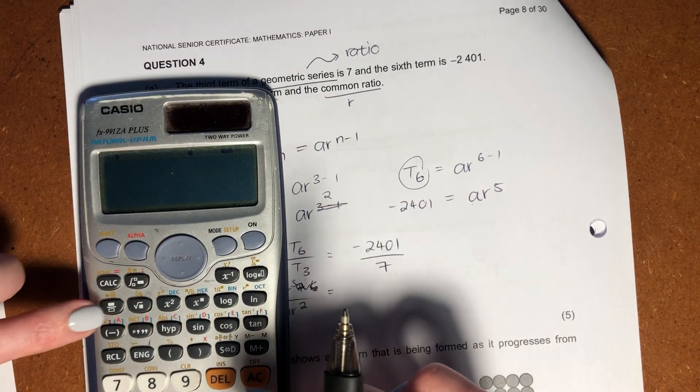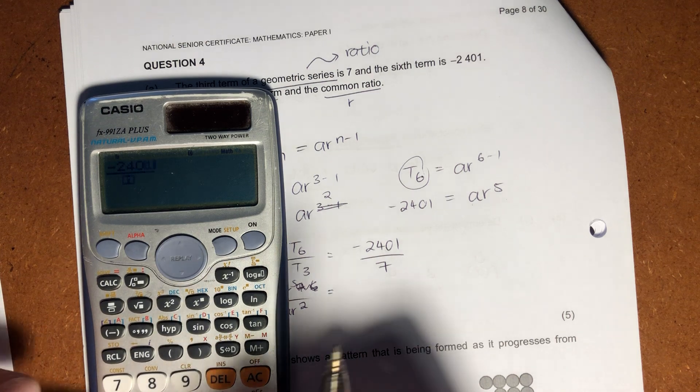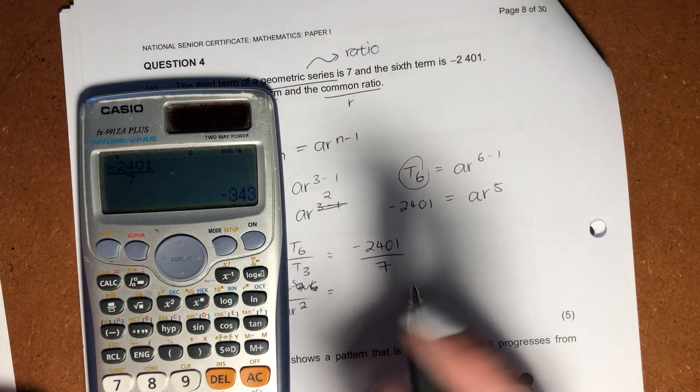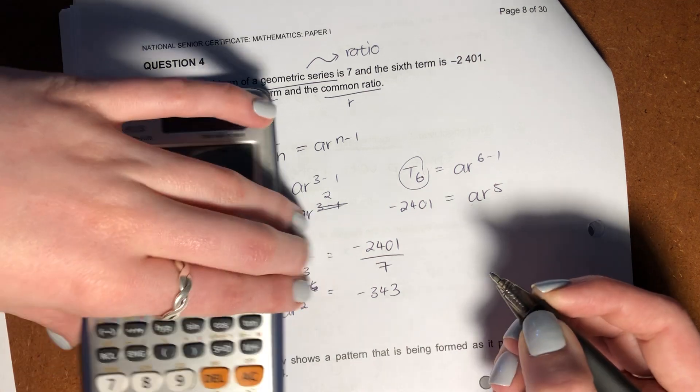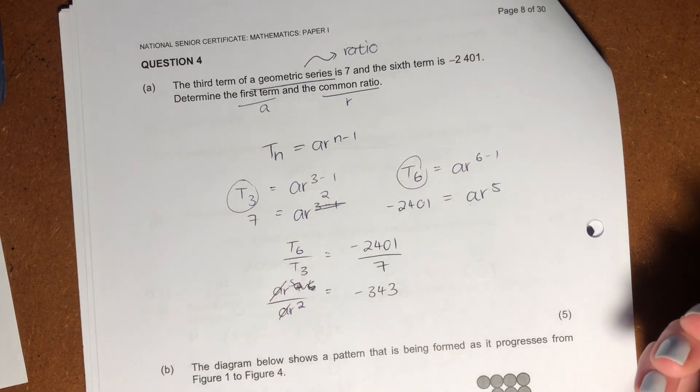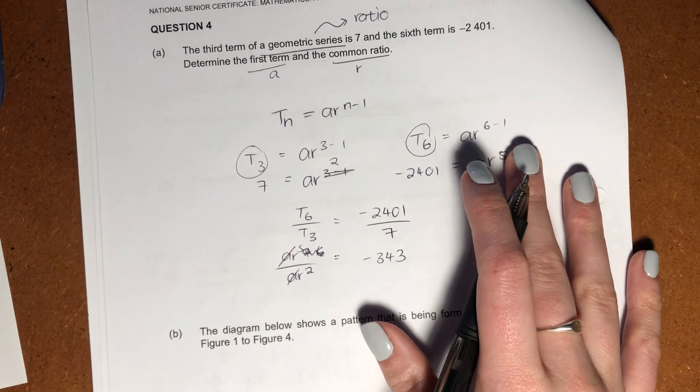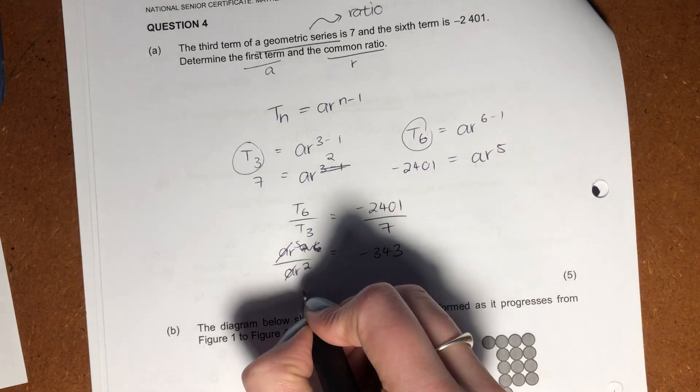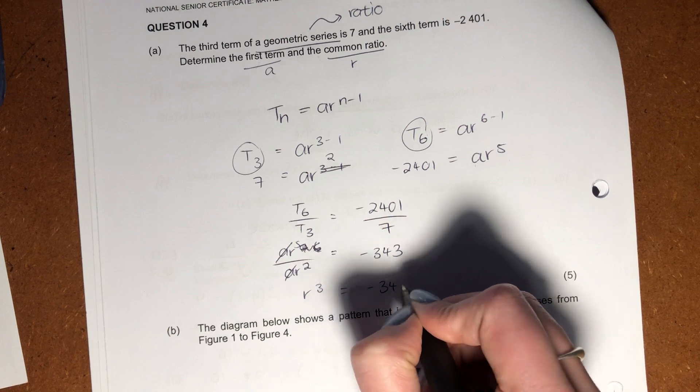So over here, I'm sorry for my messy handwriting, but I said AR^5 over AR^2 equals negative 2,401 divided by 7. Put that into your little calculator, negative 2,401 divided by 7. That gives me negative 343.